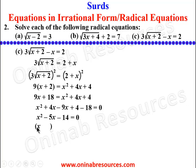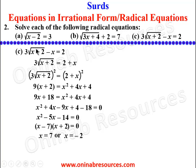Factorising x² − 5x − 14 = 0, the two factors of −14 whose sum gives −5 are −7 and +2, so (x − 7)(x + 2) = 0, meaning x = 7 or x = −2. For x = 7: √(7+2) = √9 = 3, and 3 × 3 − 7 = 2 ✓. For x = −2: √(−2+2) = √0 = 0, and 3 × 0 − (−2) = 2 ✓. Both values are correct. That is the end of Problem 2.